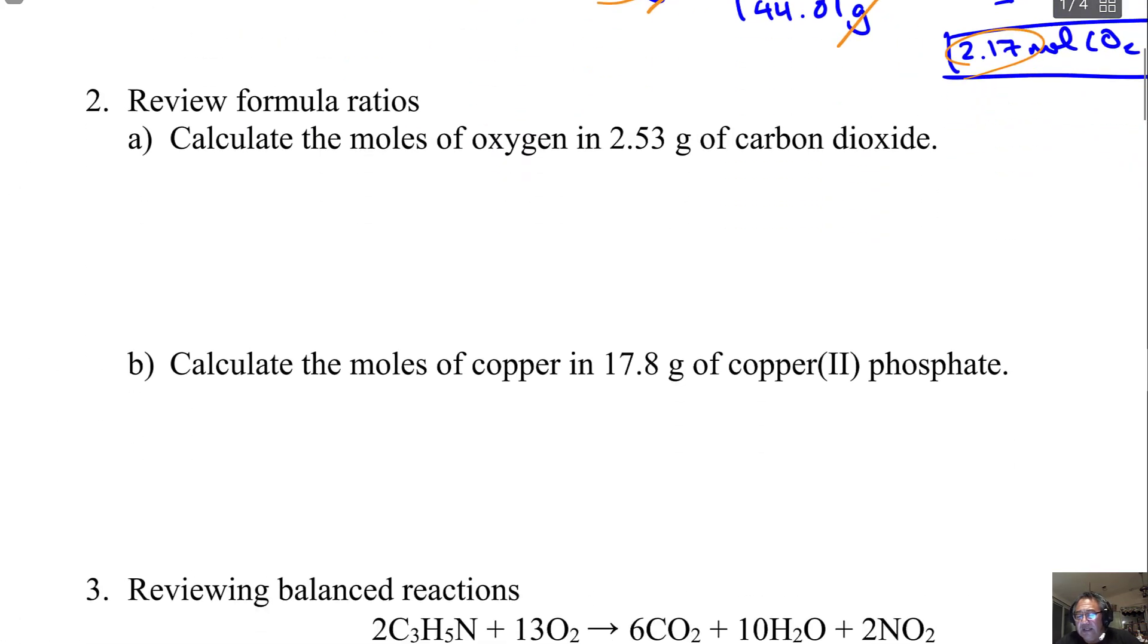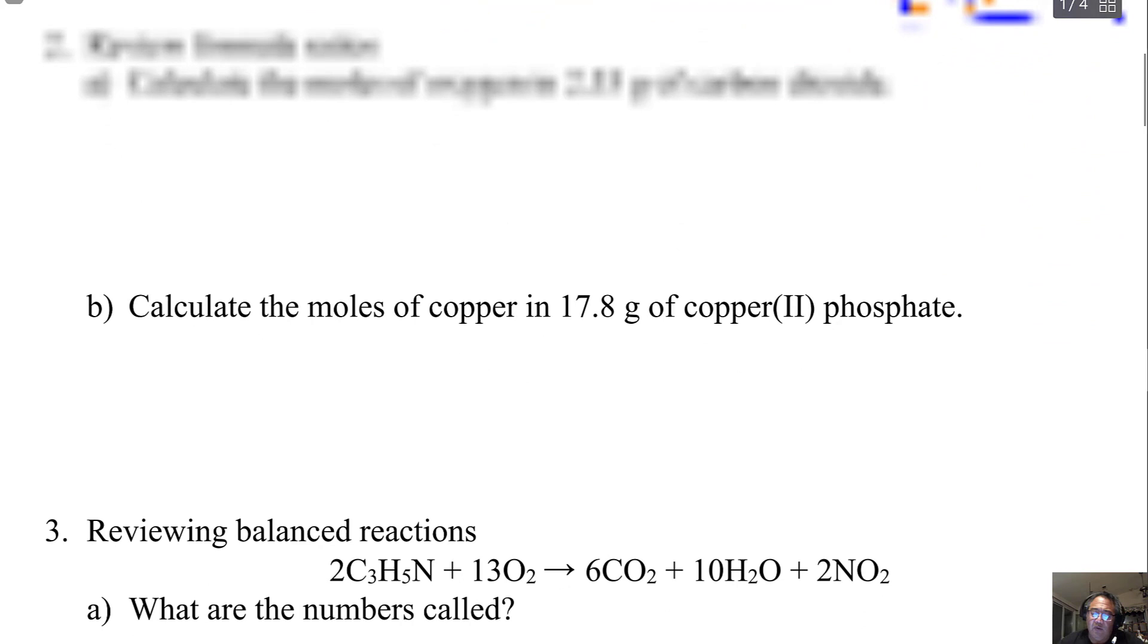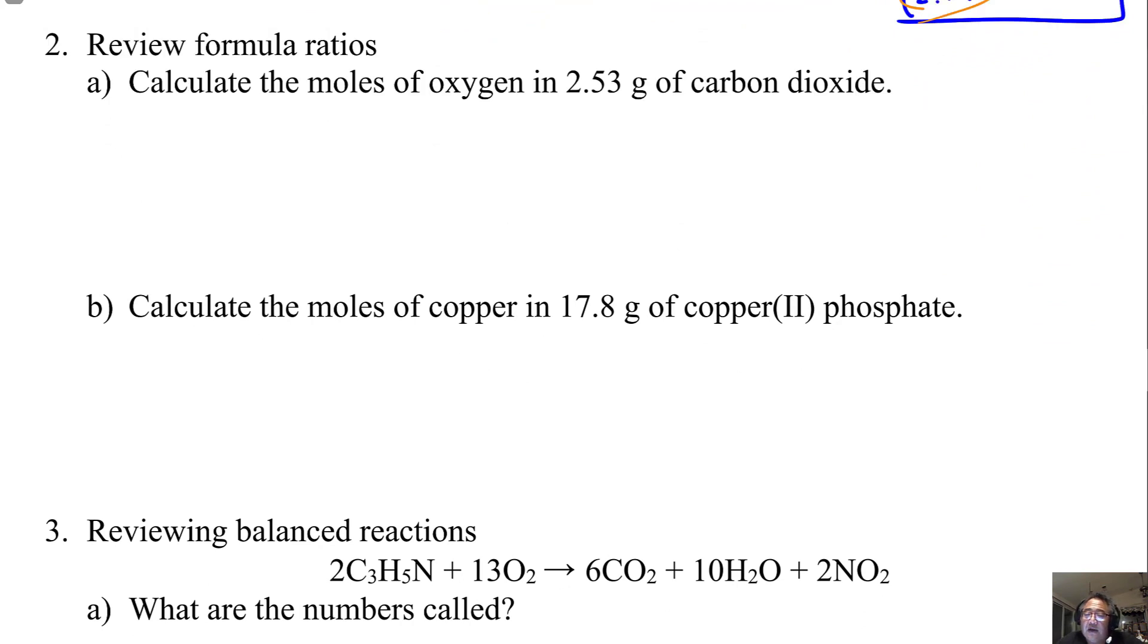Now we need to review the idea of formula ratios. What we'll be doing in this chapter is using ratios of compounds and chemical equations the same way you remember using formula ratios in calculations before. In this first one, it says calculate the moles of oxygen in 2.53 grams of carbon dioxide. In most of these problems, these are two-step problems.